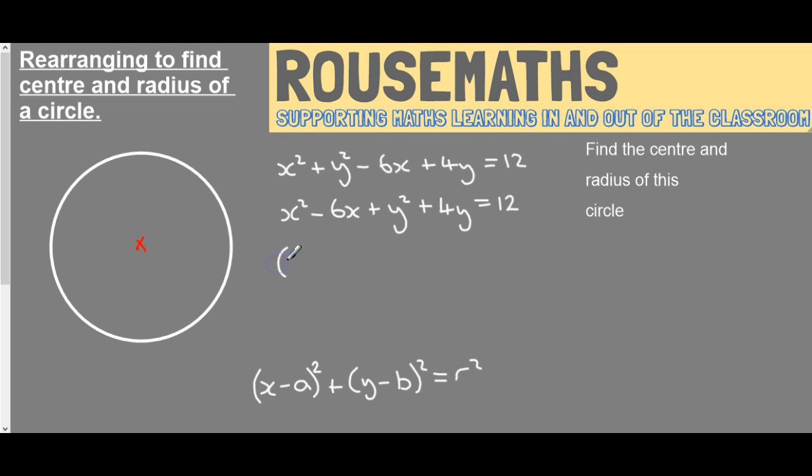If you halve the x coefficient and put (x - 3)² in the bracket squared, when you expand this bracket you'll get x², minus 6x, but you'll also get 9.